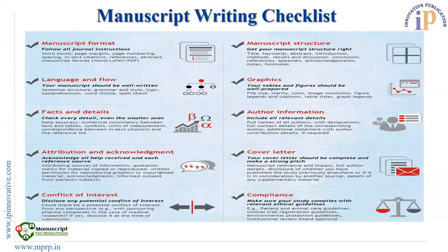Your manuscript should be well written and well developed — tables and figures should be well prepared, and facts and details should be clear. As an author, it is your primary responsibility to check the author instructions of any journal. Attribution and acknowledgement should be included. A cover letter signifies the importance of the paper for that particular journal, so it should be written very precisely and very clearly. Then, conflict of interest and compliances.